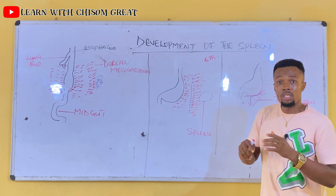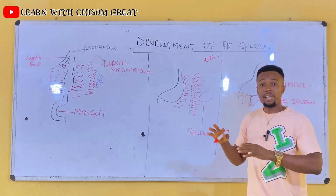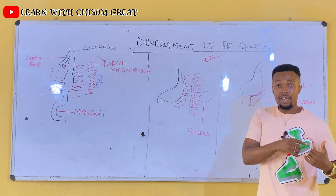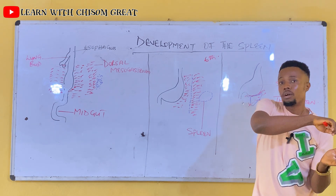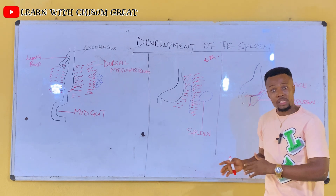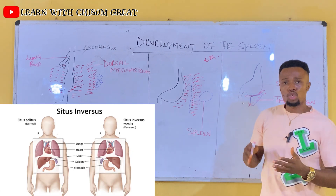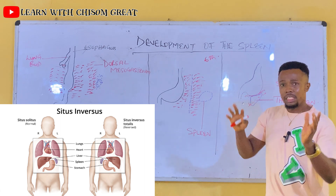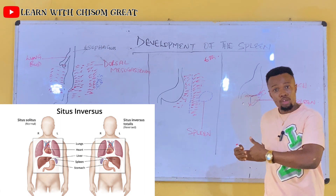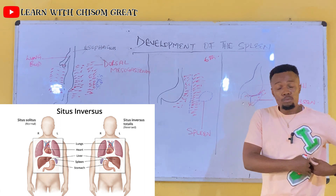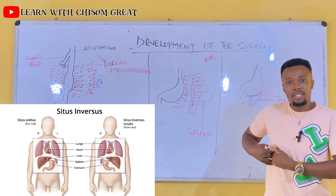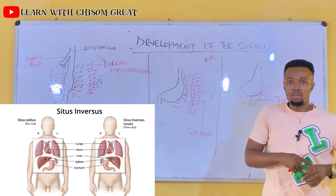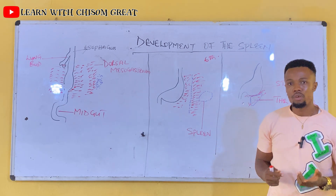The third congenital anomaly is a situation where the spleen is located on the right side of the abdomen and the pancreas is located on the left side of the abdomen. In that situation, it is known as situs inversus. So the spleen, instead of being on the left side of the abdomen, is found on the right side, and the pancreas, instead of being on the right side, has rotated to the left side of the abdomen.